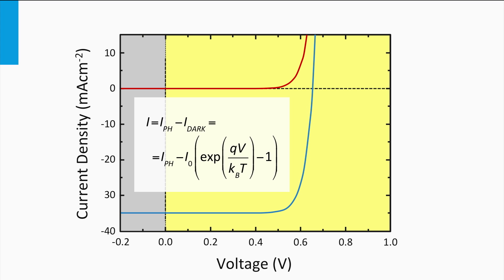The IV curve of an ideal solar cell can be described by a simple equation. The total current generated by an illuminated P-N junction is the photocurrent minus the current of the P-N diode in the dark.